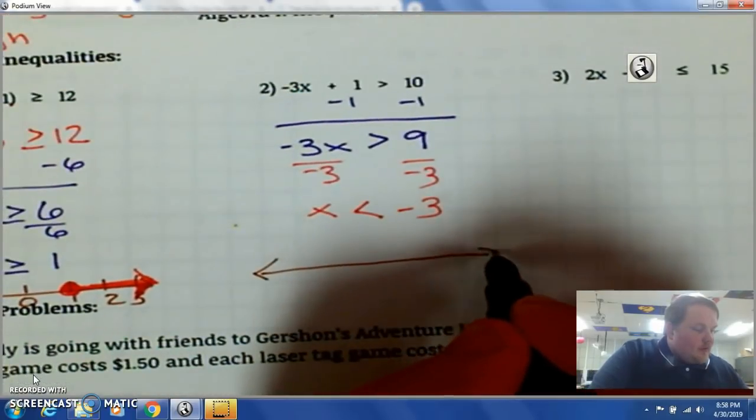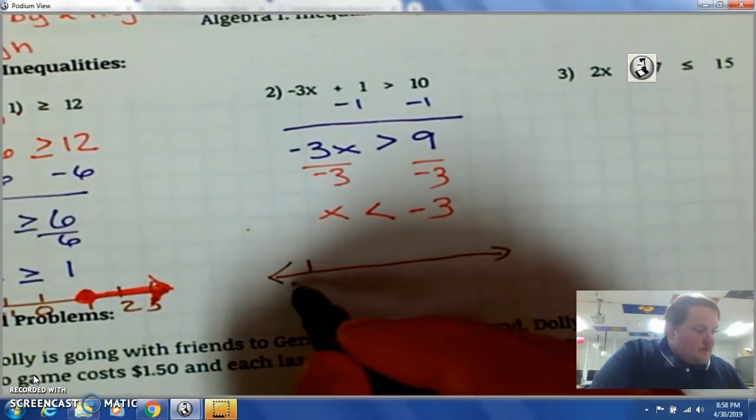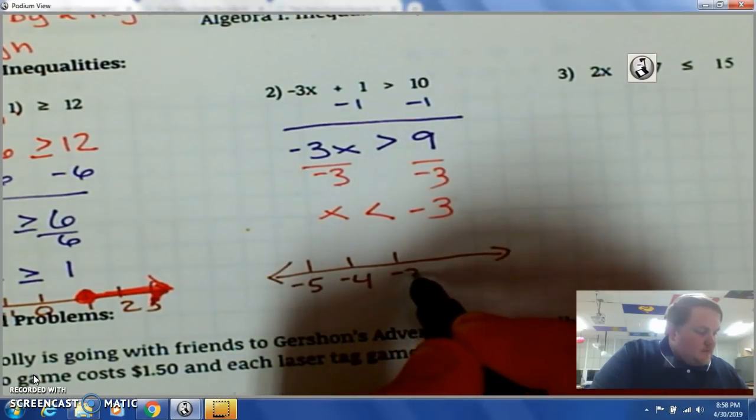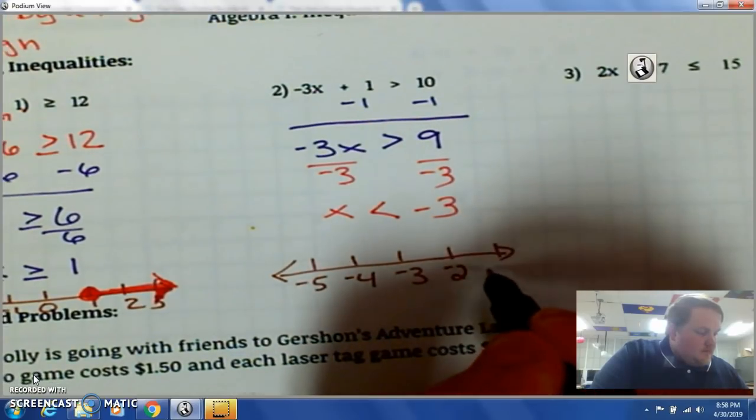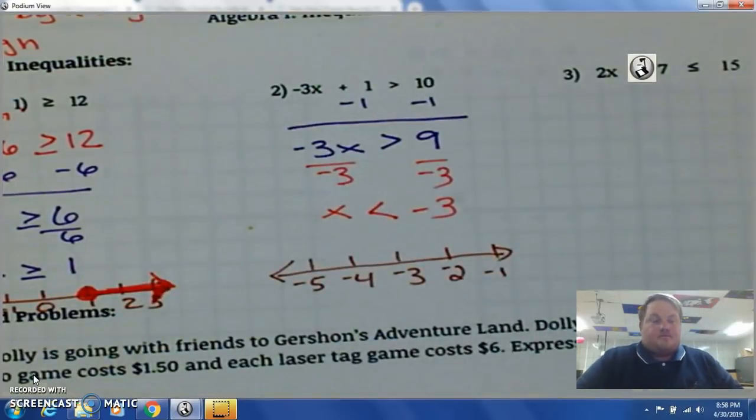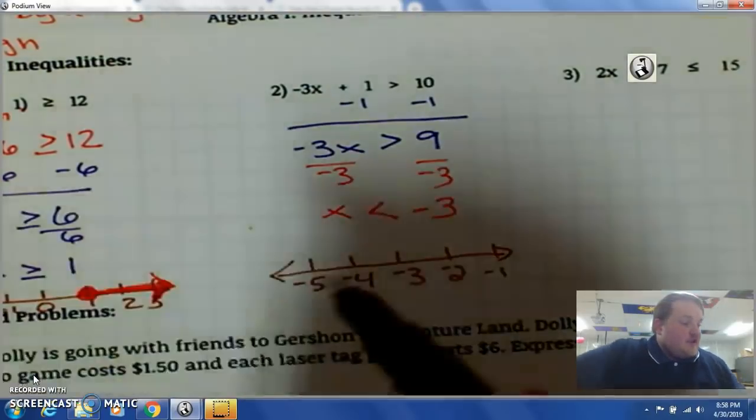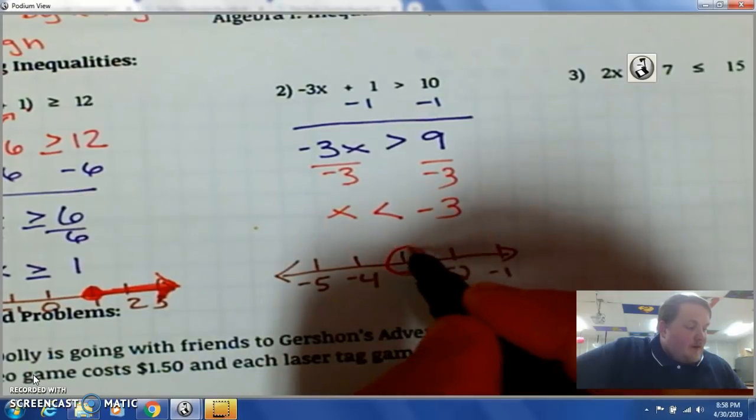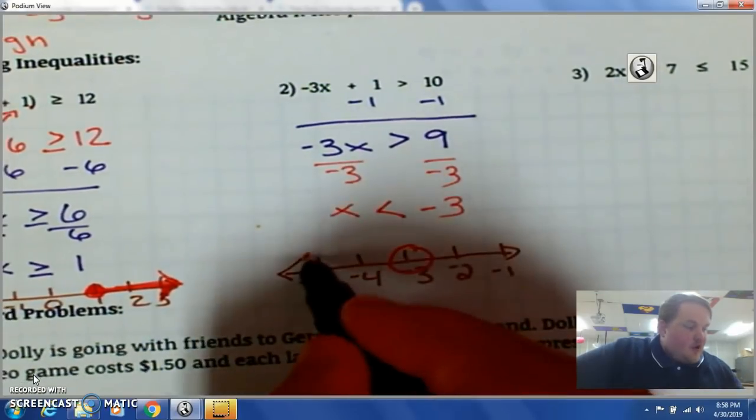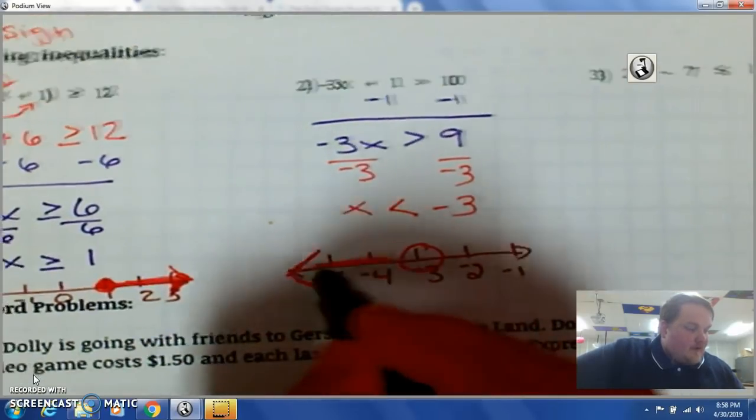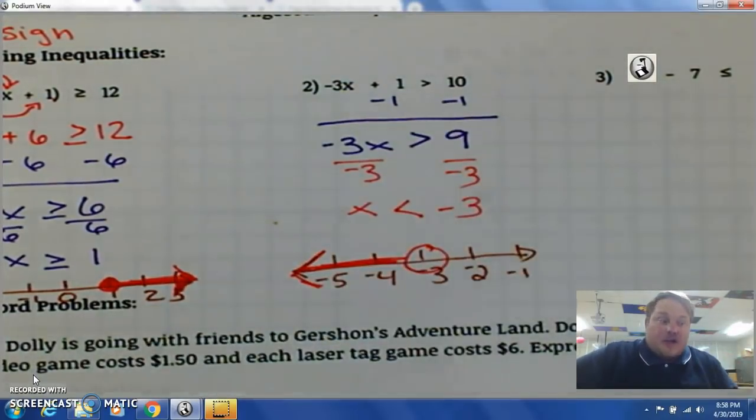So, here's my number line. The circle will be on negative 3 but open because there's no line underneath. And go in the direction of the arrow. Any number that's less than negative 3. The arrow is going in that direction.